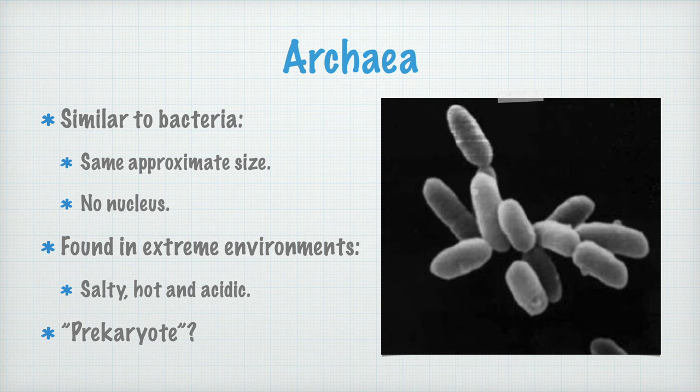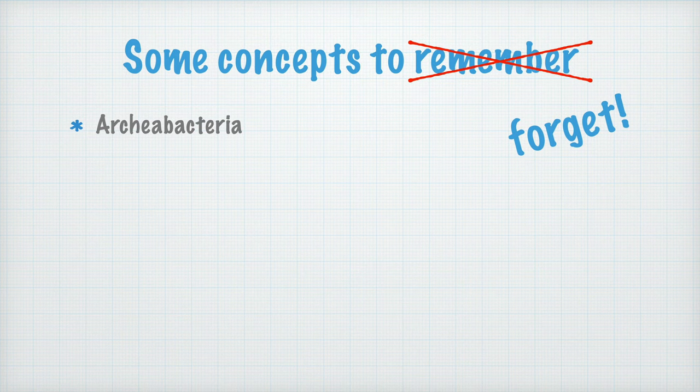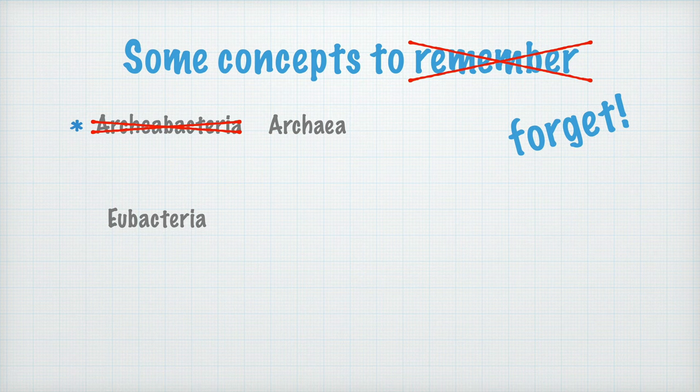Let's revise some concepts I want you to remember — or actually, some concepts I would like you to remember to forget. First, there are no archaebacteria. You still see this word pop up from time to time in the literature, but since they're not bacteria, there is nothing called archaebacteria. Archaea is the correct concept. Sometimes you also see the concept 'eubacteria' — that is, true bacteria — to differ them from archaebacteria. But since there are no archaebacteria, there's no need for the concept eubacteria. Instead, we just call them bacteria.